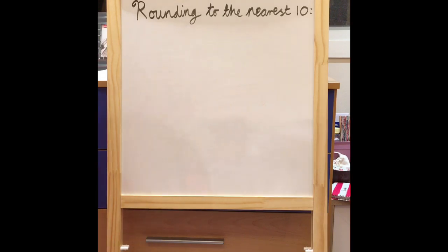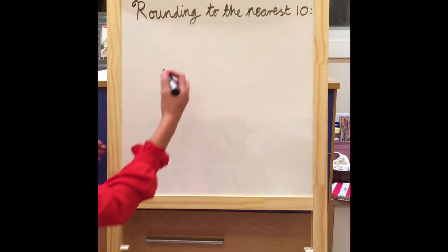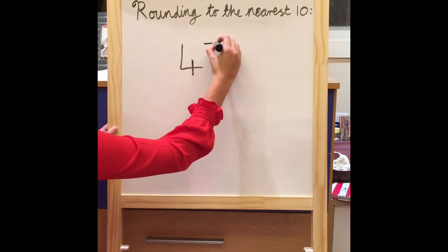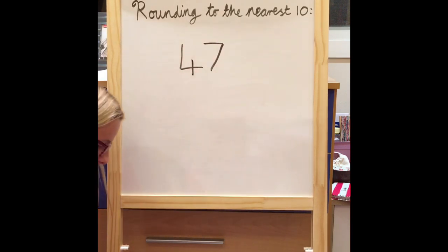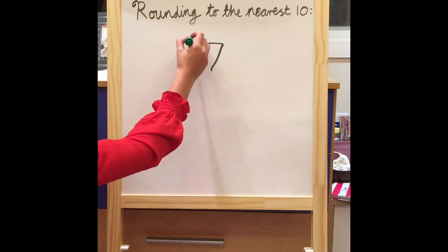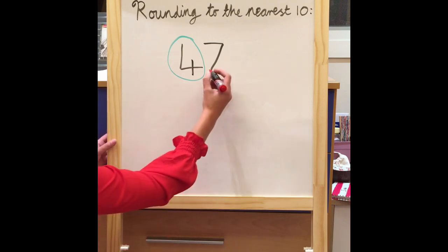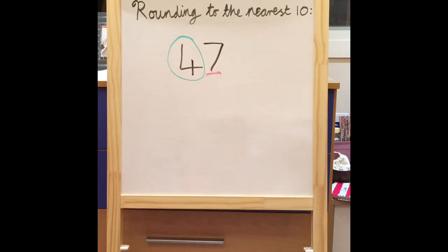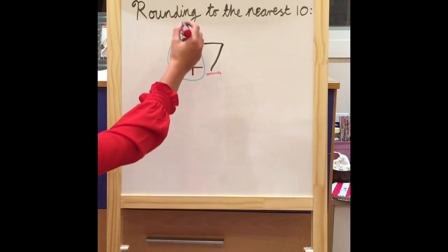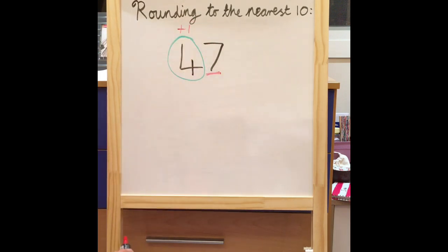Rounding to the nearest ten. First let's look at the number 47. Because we're rounding to the nearest ten we need to circle our tens column. Thinking back to my rhyme: circle your number, look next door. So I need to look next door to the number I've circled, and that is our seven. Five or greater add one more — seven is five or greater so I must add one more to my four. I'm adding one to my tens column, so now in my tens column I have a five.